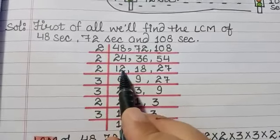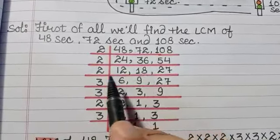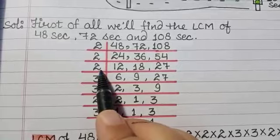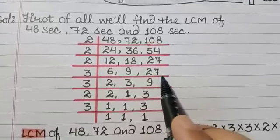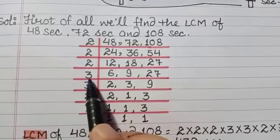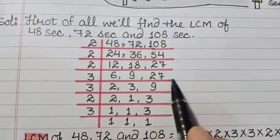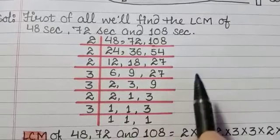So 2 into 6 is 12, 2 into 9 is 18, 27 is not divisible by 2, so it will come as it is. So the next prime number is 3. Now all three numbers are divisible by 3.